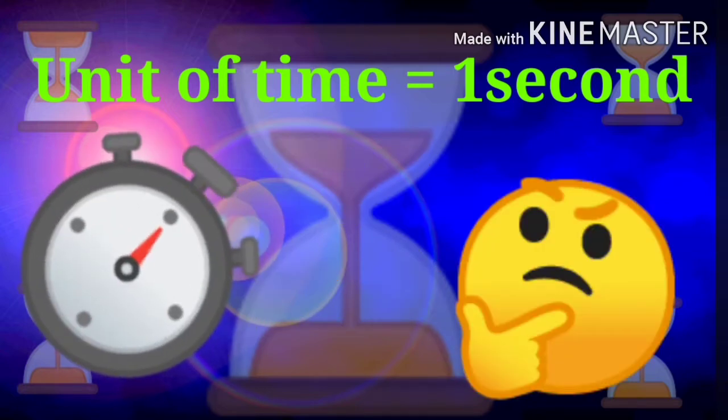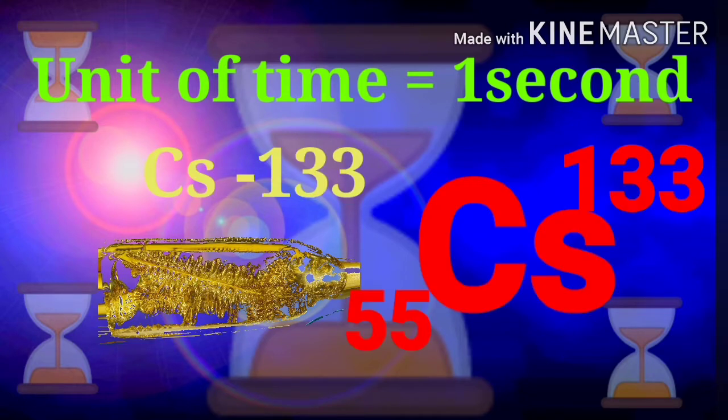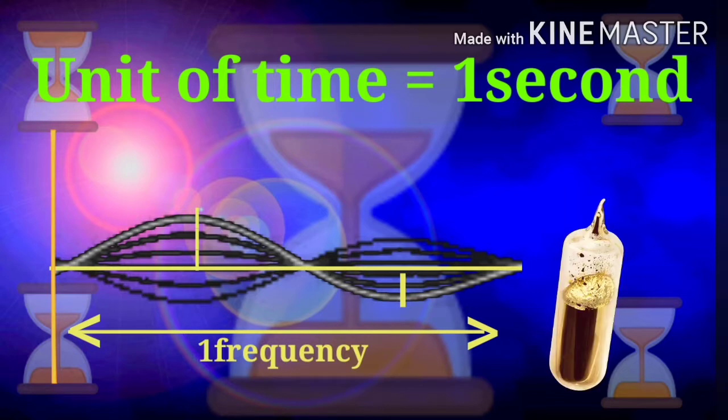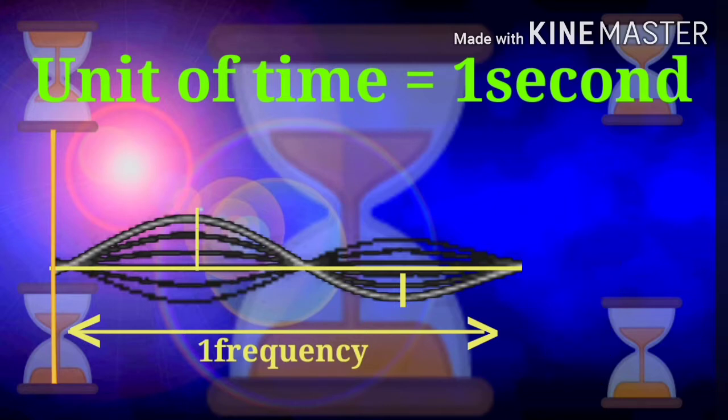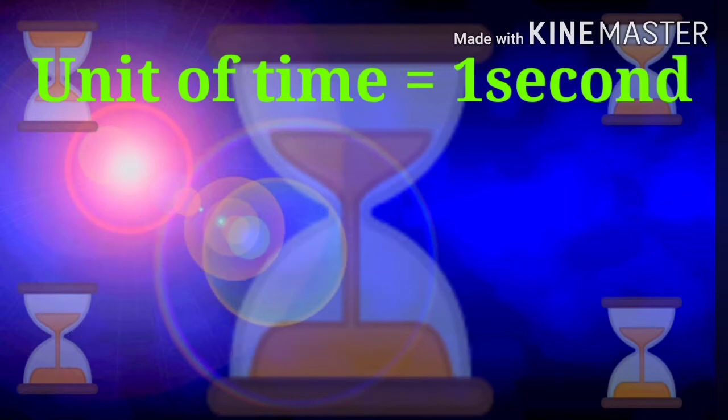But what is the time that 1 second is called? Cesium metal is used to measure seconds. The cesium-133 isotope of cesium is taken, and the frequency of its vibrations or waves is measured. When its frequency becomes 9,192,631,770, the time is called 1 second.